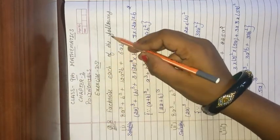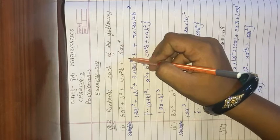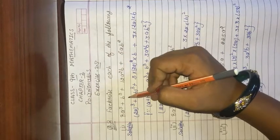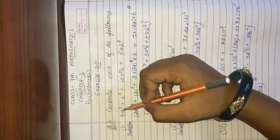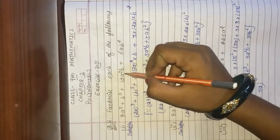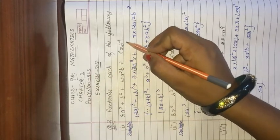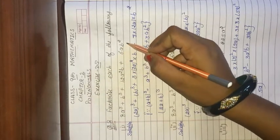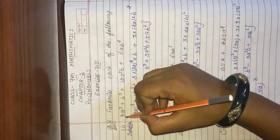Factorize each of the following. First part given is 8a³ + b³ + 12a²b + 6ab². Now we can write 8's factors.